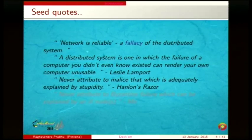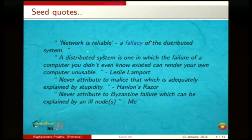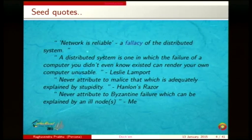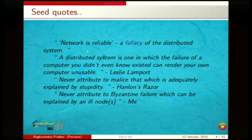Some of the seed quotes: 'A network is reliable' is a fallacy of distributed systems. 'A distributed system is one in which failure of a computer you didn't even know existed can render your own computer unusable.' And never attribute to Byzantine failure what can be explained by an ill node. A Byzantine failure is one in which a node with bad intent can bring down a whole cluster — satisfying Byzantine fault tolerance requires a great deal of complexity.